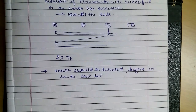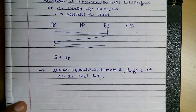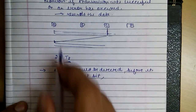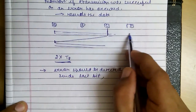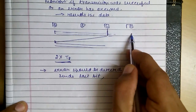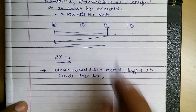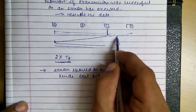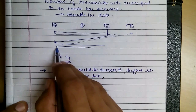It has slowed down its process. So in the worst case scenario it will be 2×Tp, as it will take Tp time to reach the other end and another Tp to get the information that the collision has occurred back.